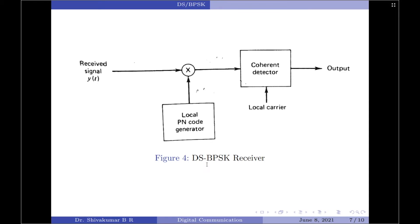Let us now move on to the receiver part. Just like the transmitter, the receiver of the DSBPSK system also consists of two stages of demodulation. The first stage is that of the de-spreading. The second stage is for the coherent detection of the BPSK signal. The received signal y(t) and a locally generated PN sequence are applied to a multiplier. This multiplication represents the first stage of demodulation. The second stage consists of a coherent detector, the output of which provides an estimate of the original data sequence.